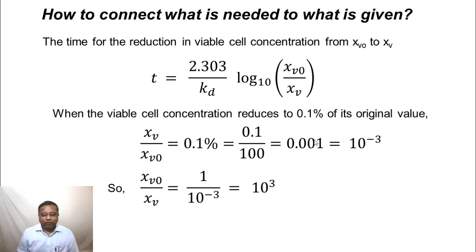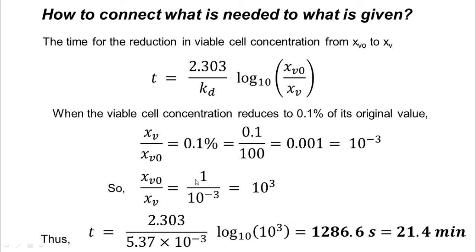So xv0 by xv, if we flip it around, it will be 1 by 10 power minus 3 or 10 power 3. And thus, the time required for the viable cell concentration to reduce to 0.1 percent of its original value would be the substitution of the various known aspects now into this equation: 2.303 by 5.37 times 10 power minus 3 log to the base 10 of 10 power 3. That turns out to be 1286.6 seconds or 21.4 minutes.